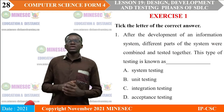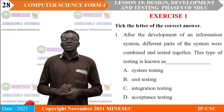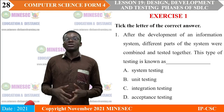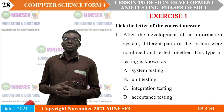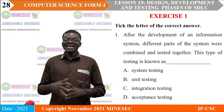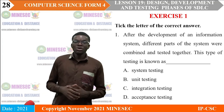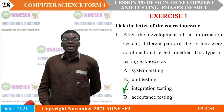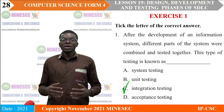To better understand all we have covered, we will look at some practice questions. The first question: after the development of an information system, different parts of the system were combined and tested together — this type of testing is known as: A. System testing, B. Unit testing, C. Integration testing, D. Acceptance testing. The correct answer is C — integration testing — because we group different parts of the system and test them together.